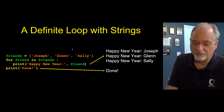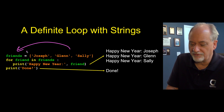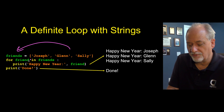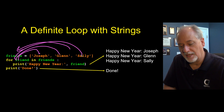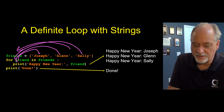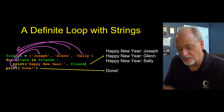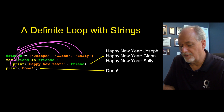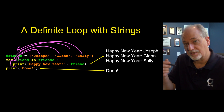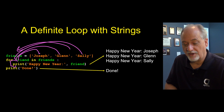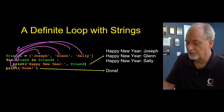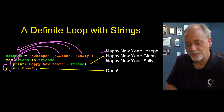You can loop through a list variable. We're going to take this list of three strings and stick it in friends, and friend is going to iterate through that. The first time through, friend is going to be Joseph; second time, Glenn; third time, Sal. That says run this indented code three times, each time the variable friend takes on a successive value from the friends array. So it prints 'Happy Birthday Joseph, Glenn, Sally,' and then we come out of the loop and print done.